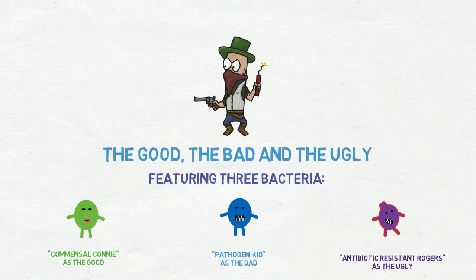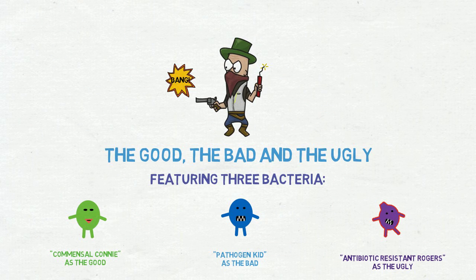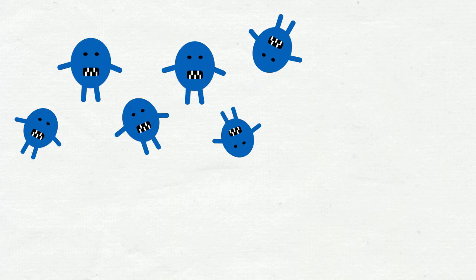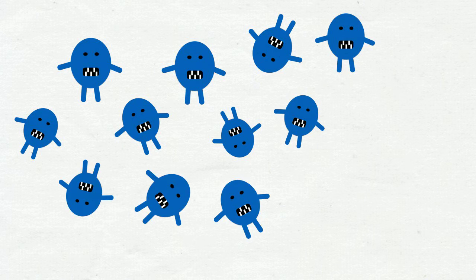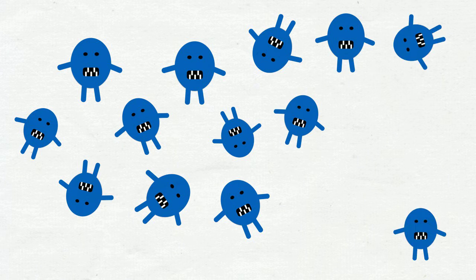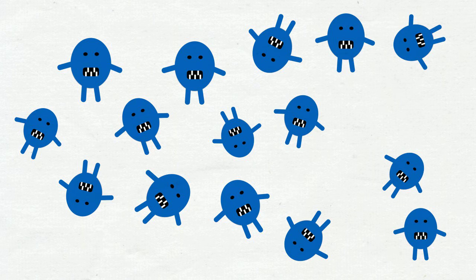On with the story. Let's look at a bacteria — in this case, a pathogen. Bacteria multiply incredibly fast and in their billions. Like any reproduction, sometimes genetic faults occur: a mutation.